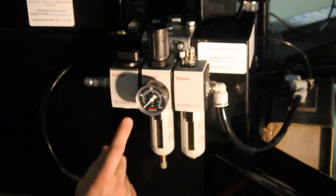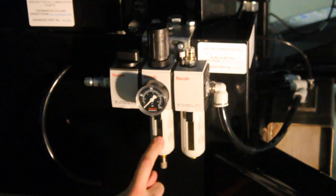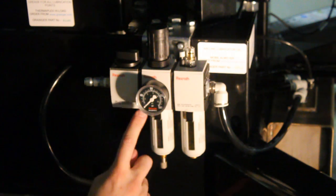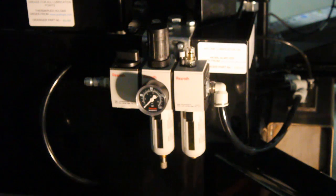This is the RFL, which is a regulator filter lubricator. This is an automatic drain, so if there were any moisture to accumulate in the system, it would automatically drain.